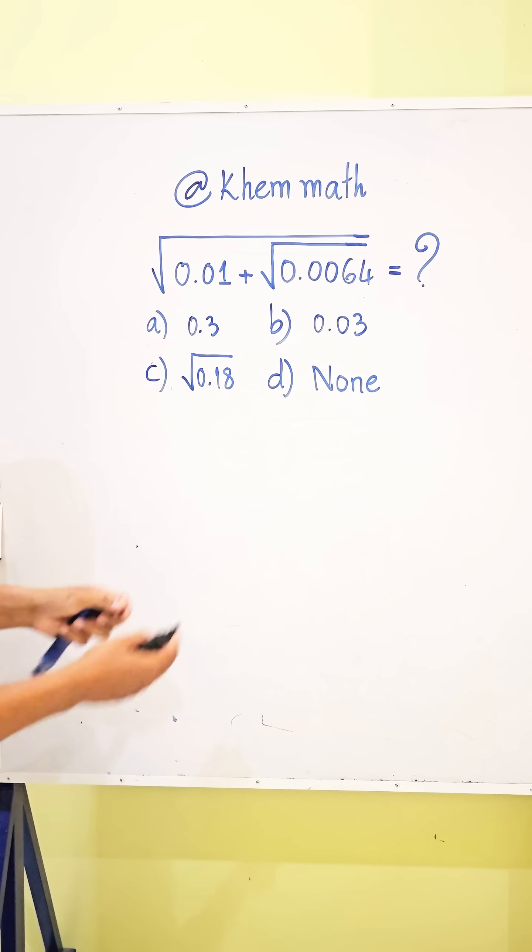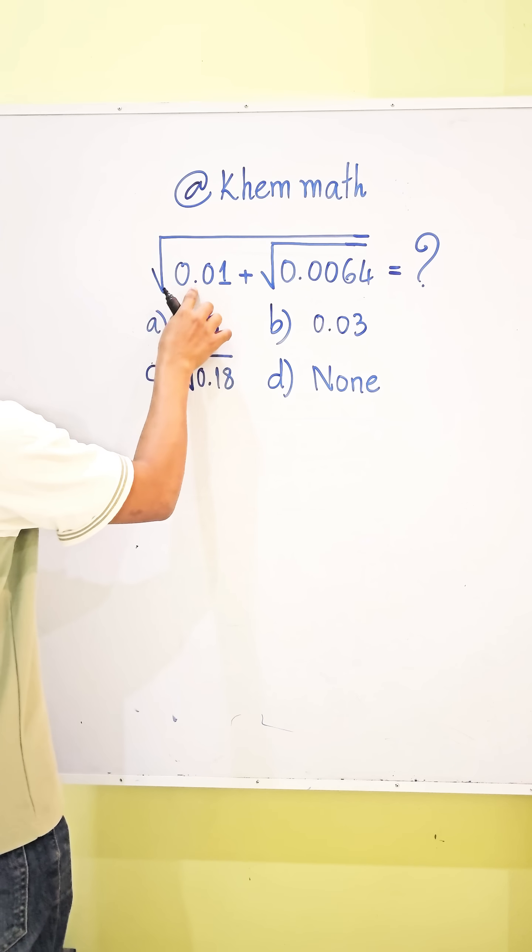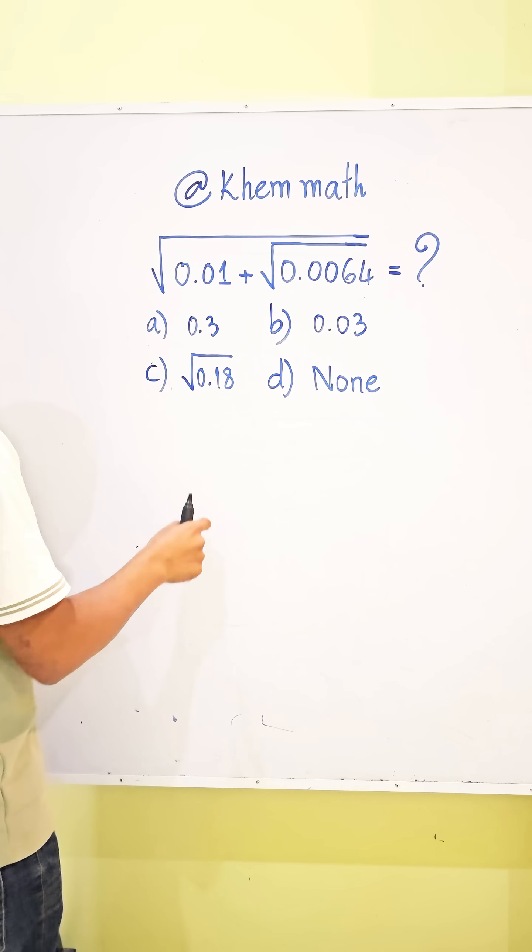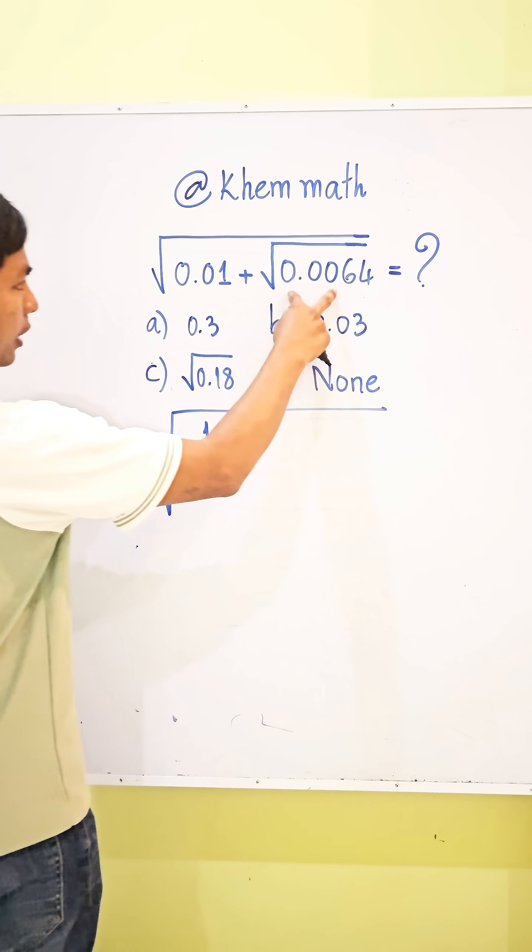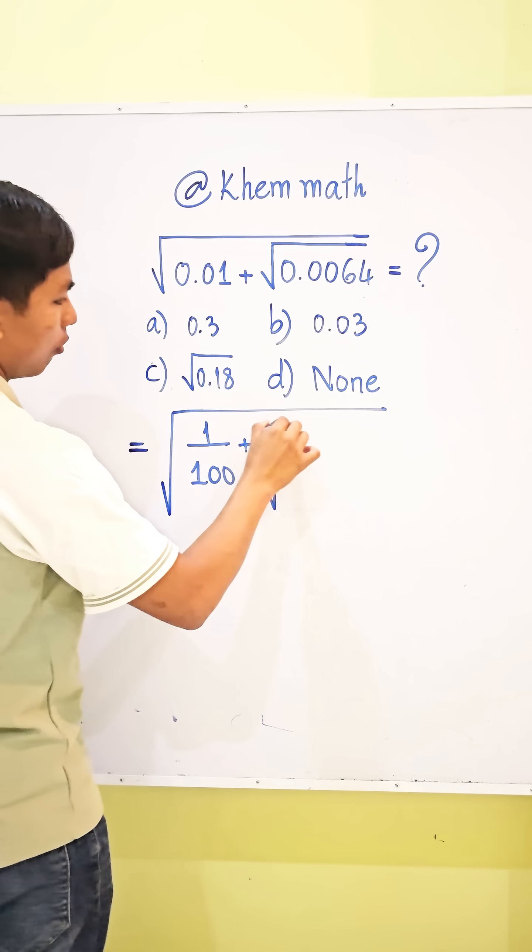Okay, look. 0.01 can be written as 1 divided by 100, so it equals square root of 1 divided by 100 plus this can be written as...